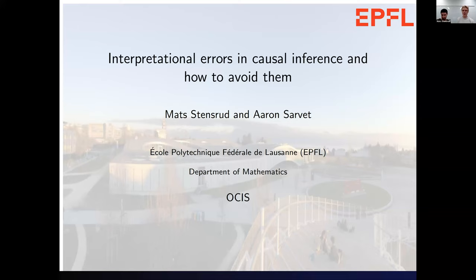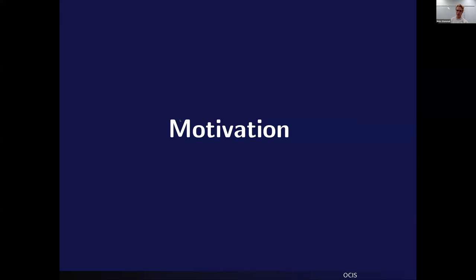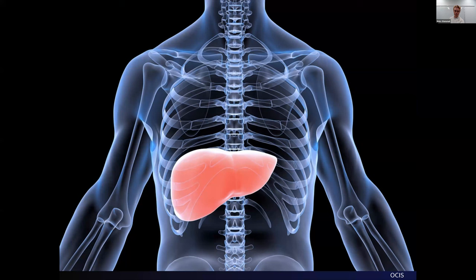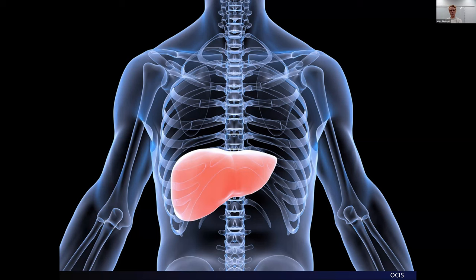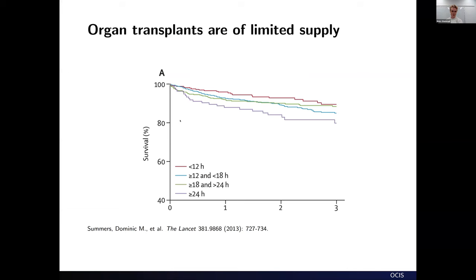Thank you so much, it's a pleasure to be here. We'll go into somewhat abstract territory today, but it's all grounded in practical questions. To begin, I want to study three concrete examples with a common thread. One characteristic of settings where clinicians are interested in policies for organ transplant is that organs are a limited resource — not enough to give to all patients on waiting lists. That's why we have waiting lists, and why there are clinical studies on associations between organ quality and patient outcomes.